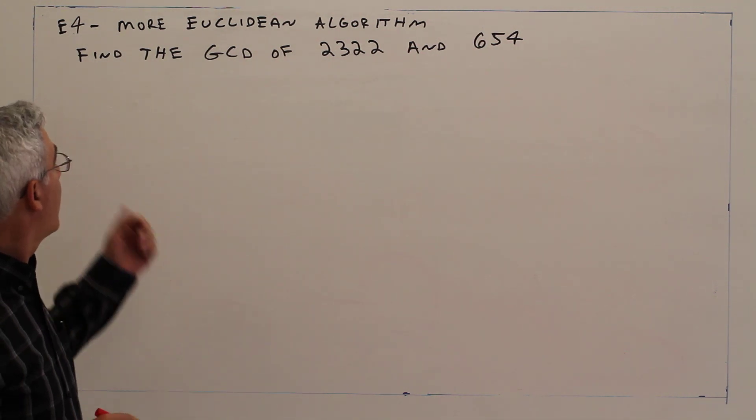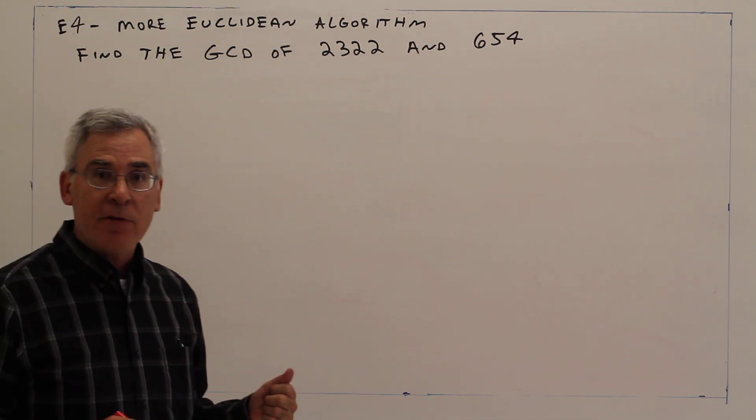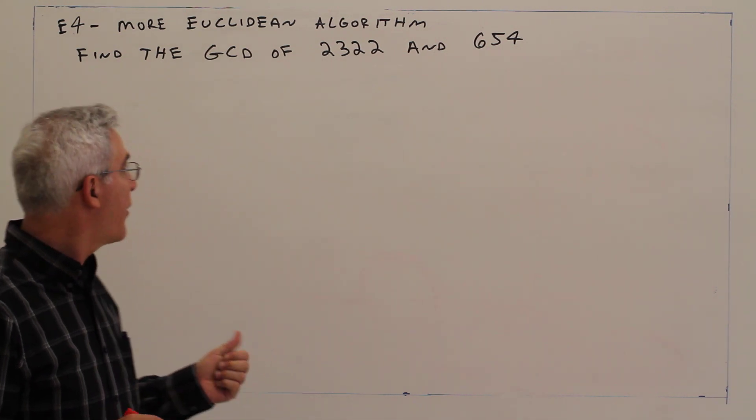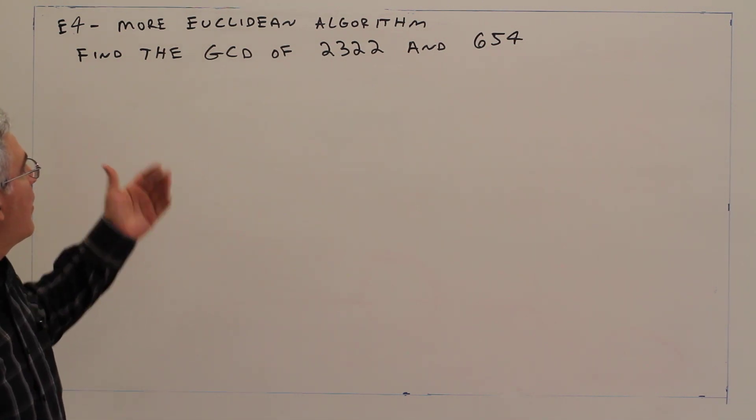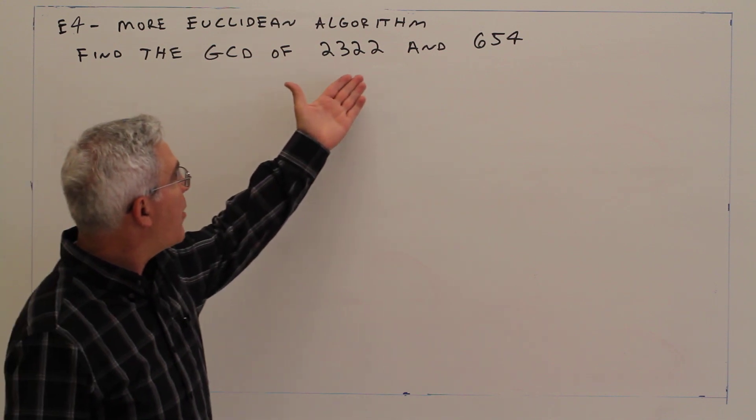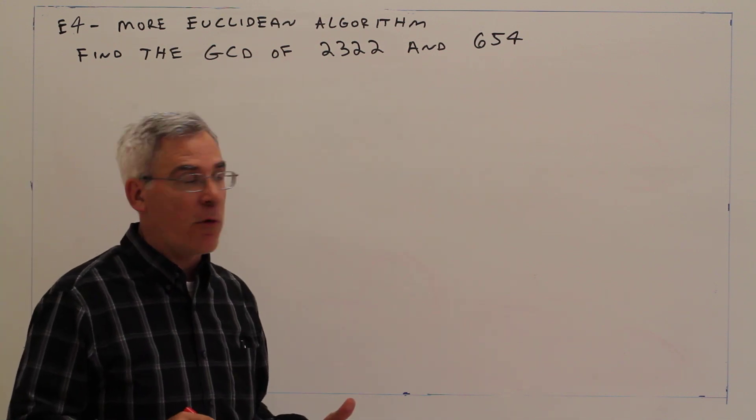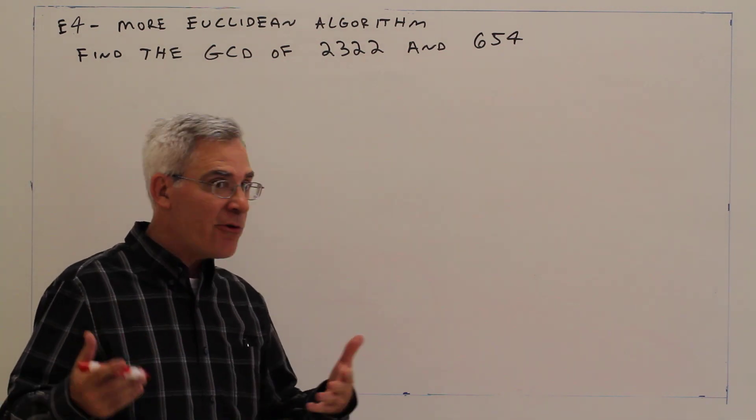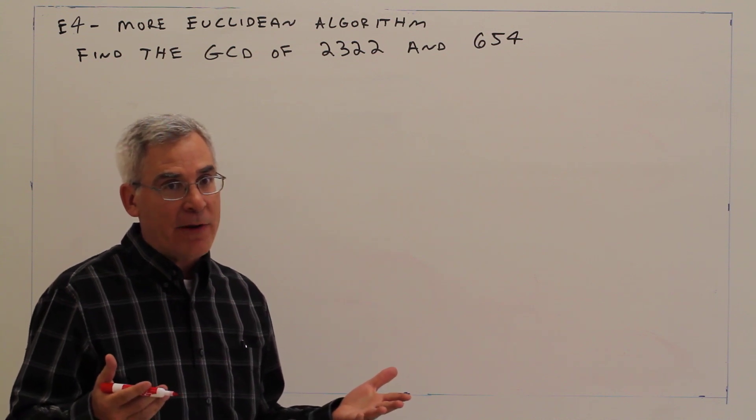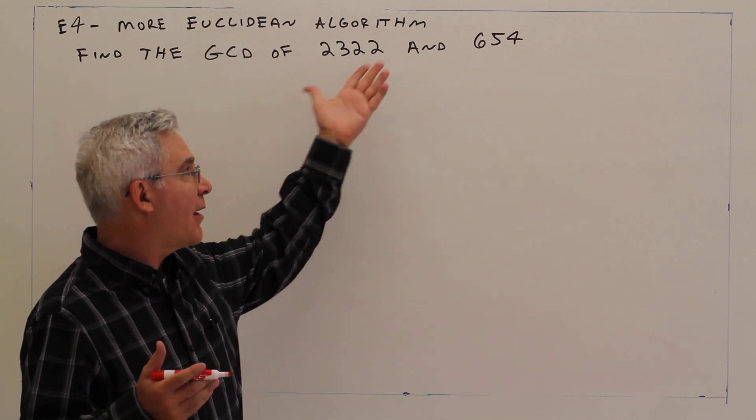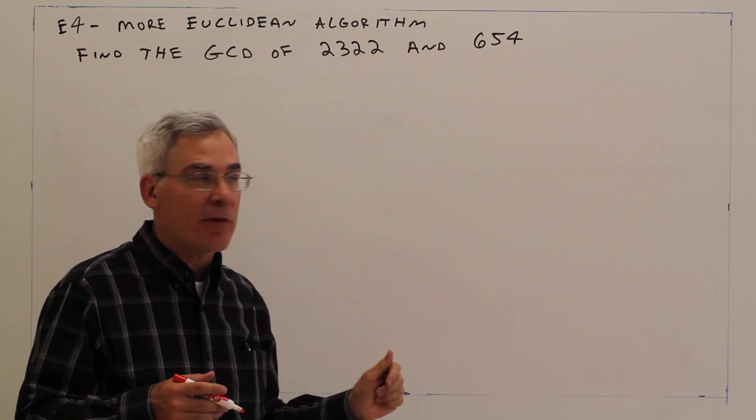Welcome to video E4. Yet another example with a Euclidean algorithm. On this problem, find the GCD of 2322 and 654. So the numbers are getting larger now. We certainly don't want to do prime factorization. Again, I could have made it be millions and billions, but we'll just keep it like this.